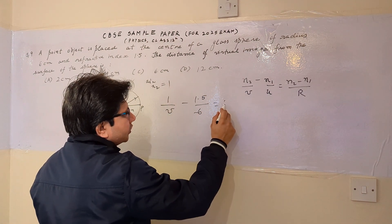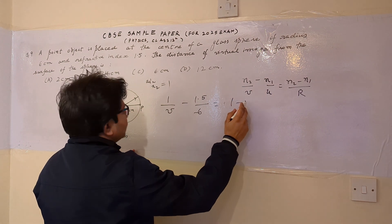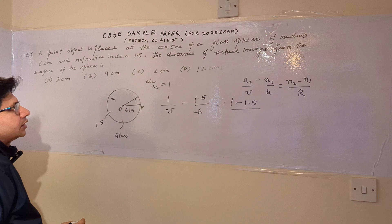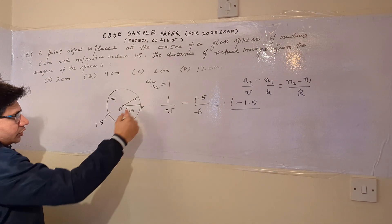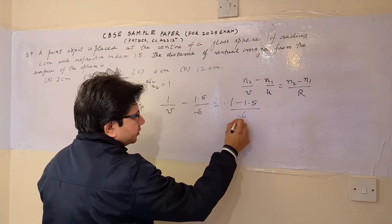And this is equal to N2 minus N1, which is 1 minus 1.5, upon R. Now R is the radius of curvature. So for this surface, the radius of curvature is negative 6.